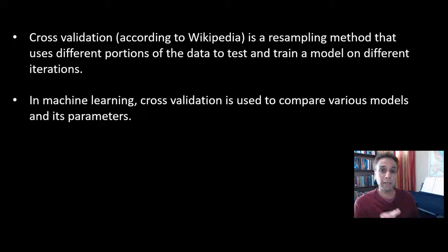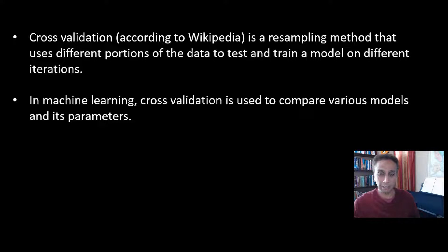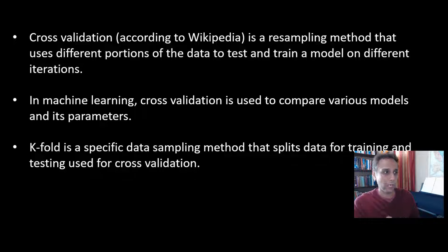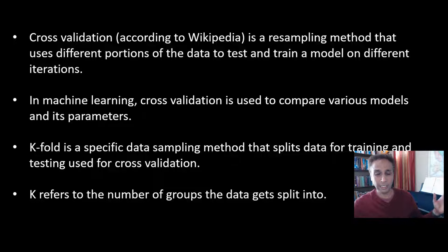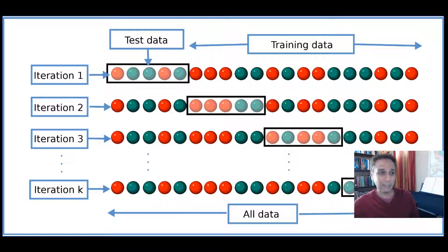In machine learning, cross-validation can be used to compare various models and their parameters — for example, a support vector machine versus a random forest, each with different hyperparameters like the number of splits in random forest or various deep learning hyperparameters. Cross-validation is a good approach for tuning parameters to identify the best settings and best model for a given problem. K-fold is a specific way of sampling the data — the K refers to the number of groups the data gets split into.